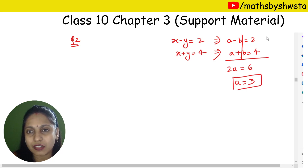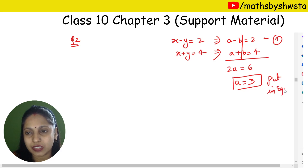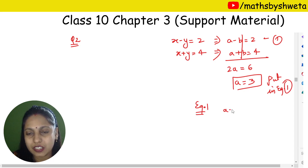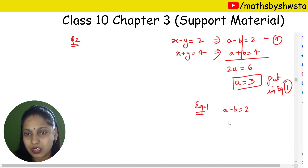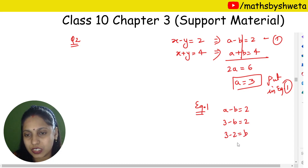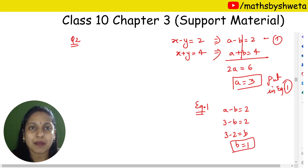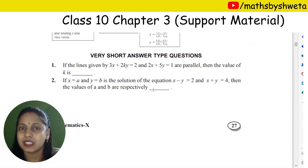Now putting a equals 3 into equation one, we have a minus b equals 2, which gives 3 minus b equals 2, so b equals 1. A and B are easily found. Question number 2 is complete.